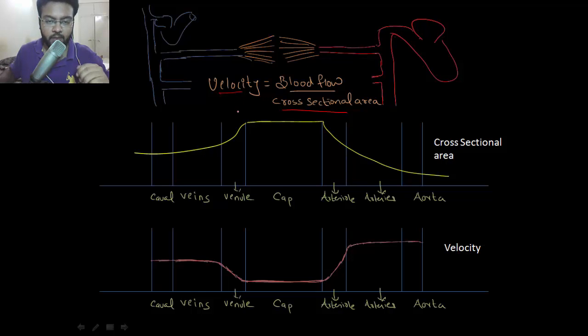Since cross-sectional area is inversely proportional to velocity and capillaries have maximum cross-sectional area, the velocity in capillaries will be minimum. Since veins are a little larger than the arteries, the velocity in veins will be a little lower than the arterial system. In short, the arterial system is a high velocity system as compared to the venous system. In the venous system, you'll notice that venules have less velocity than veins, and veins have less velocity than the caval system.